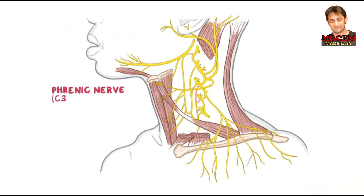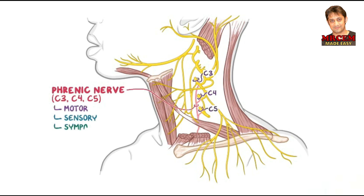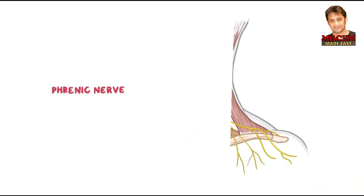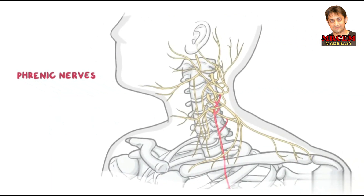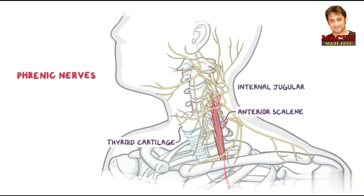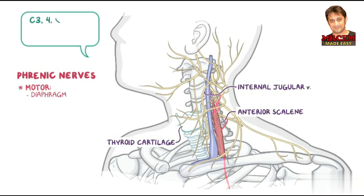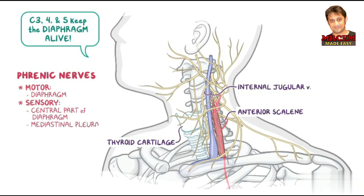The phrenic nerve originates mainly from the C4 nerve with contributions from C3 and C5. It contains motor, sensory, and sympathetic nerve fibers. Each phrenic nerve forms at the superior part of the lateral border of the anterior scalene muscle at the level of the superior border of the thyroid cartilage, and descends obliquely with the internal jugular vein across the anterior scalene. The phrenic nerves provide the sole motor supply to the diaphragm — remember this with the mnemonic: C3, C4, and C5 keep the diaphragm alive. The phrenic nerves also provide sensory innervation to the central part of the diaphragm, as well as the mediastinal pleurae and pericardium.